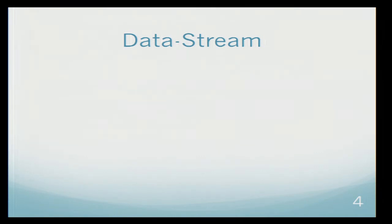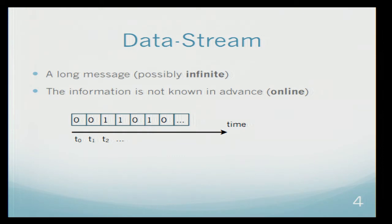Let me be slightly more formal about our model. I'll begin by explaining what a data stream is. A data stream is just a very long message, maybe infinite. And the second difference is that we don't know the data stream in advance. We just learn the data stream in an online manner. At the first time stamp we learn the first bit, at the second time stamp we learn the second bit, and so on.